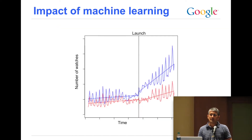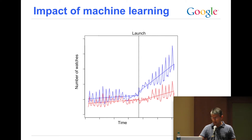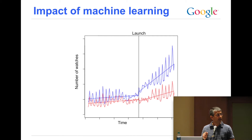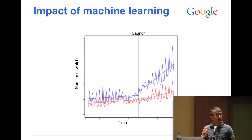This graphic shows what happened when we launched this machine learning model. On the x-axis we have time, measured in days or weeks or months. On the y-axis we have the number of video watches. The blue squiggly line shows watches coming from the recommended videos product, and the red line is a baseline showing watches from other sources. When we launched the model, there was a pretty dramatic improvement in the number of watches across all of YouTube. The red line actually saw a downtick, probably because users were moving away from those sources and towards recommended videos.